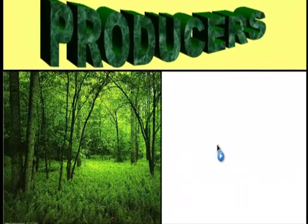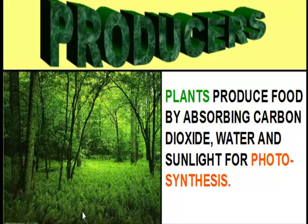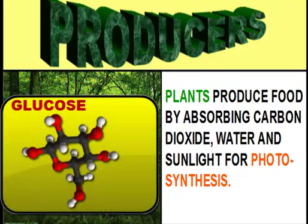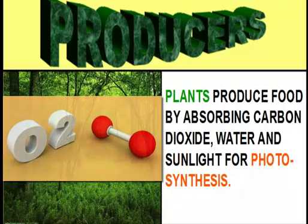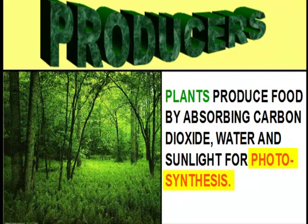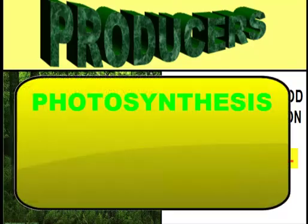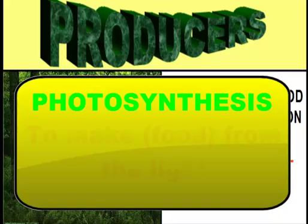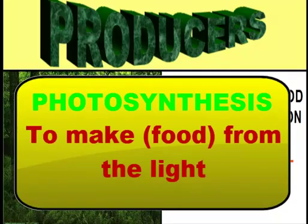Let's talk about plants. Plants produce their food by absorbing elements and compounds in the environment, such as carbon dioxide, water, and sunlight. They take the sunlight they absorb and react it with the carbon dioxide and water to produce glucose — a sugar that all organisms need to make energy — and they release oxygen as a waste product. If you break up the word 'photosynthesis,' photo means light and synthesis means to make, so photosynthesis means to make from the light — we're making food from light.